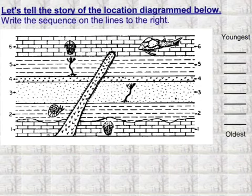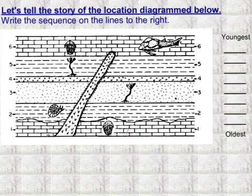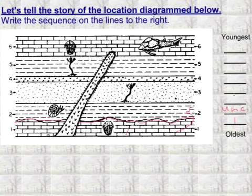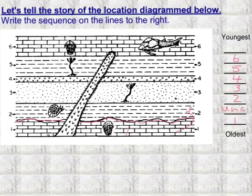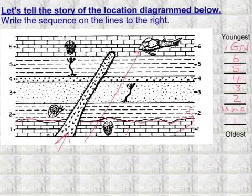Let's look at this particular diagram and work oldest to youngest. First we probably had layer one — the oldest. After that, there's a squiggly line, which is an unconformity. Then, by the law of superposition, layer two was deposited on top, then layer three, then layer four, then layer five, then layer six. Finally we have the igneous intrusion, which cuts through all six layers, so we know the igneous intrusion must be last.